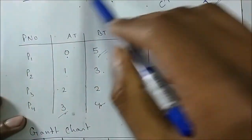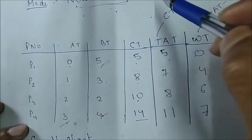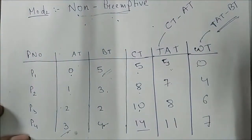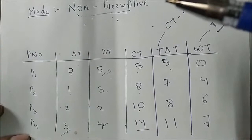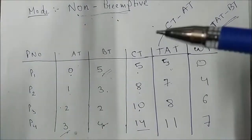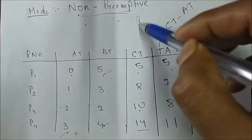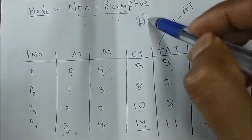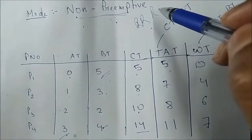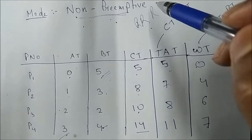FCFS is non-preemptive — the process runs its full burst time until it finishes. When we look at preemptive algorithms like Round Robin, we'll cover those in upcoming videos. Thank you for watching — please subscribe to the channel for more videos.